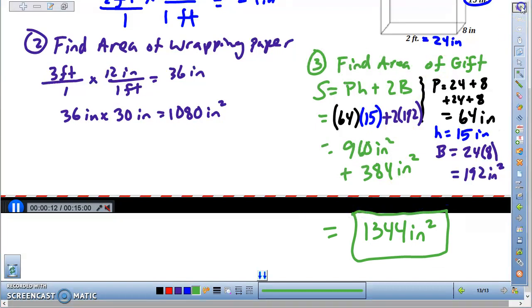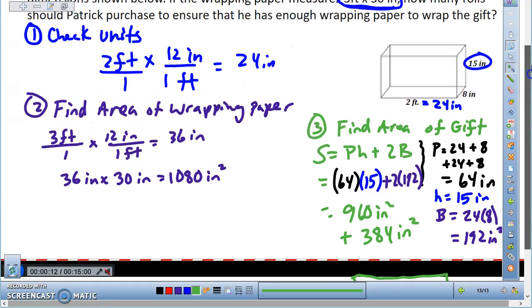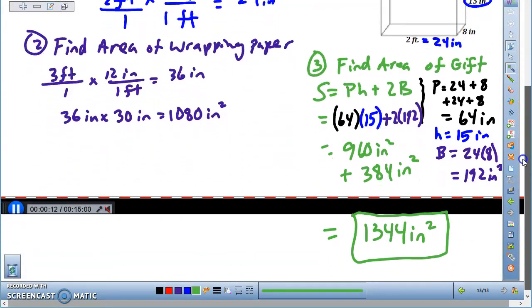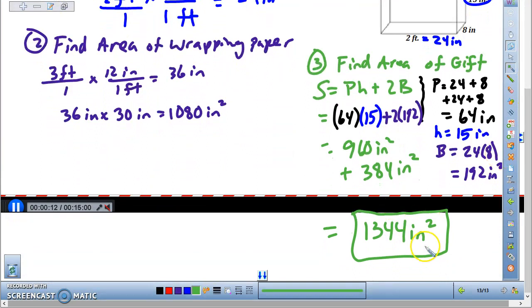We are asked in this problem, however, to calculate how many rolls should Patrick purchase to ensure that he can totally wrap the gift. So what we need to do is take the area of our gift and divide it by the area of the wrapping paper.